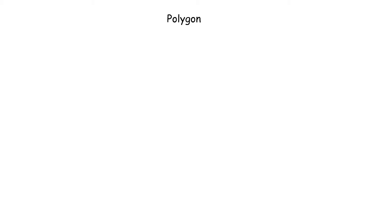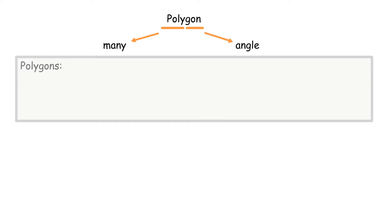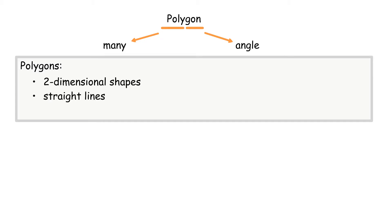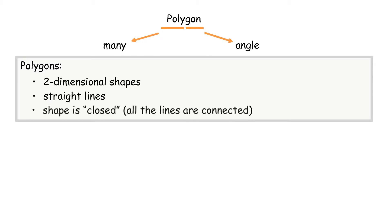Polygon refers to the words 'poly', which means many, and 'gon', which means angle. Polygons are two-dimensional shapes. They are made of straight lines, and the shape is closed — all the lines are connected.